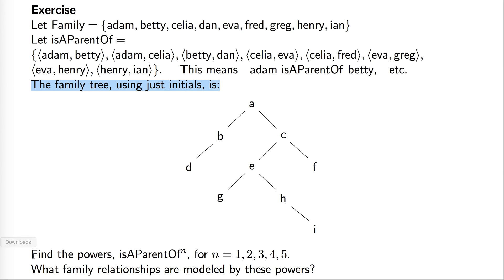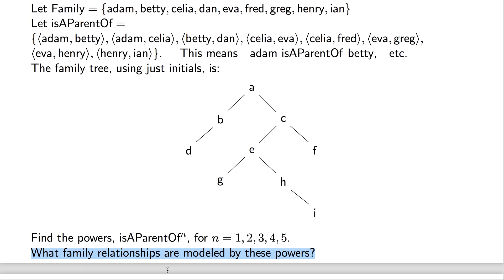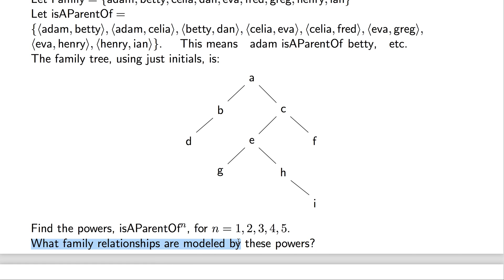Given this relation, your task is to find the powers isAParentOf to the nth power for n being 1, 2, 3, 4, and 5, and also for every such power tell what family relationship is modeled by the power.